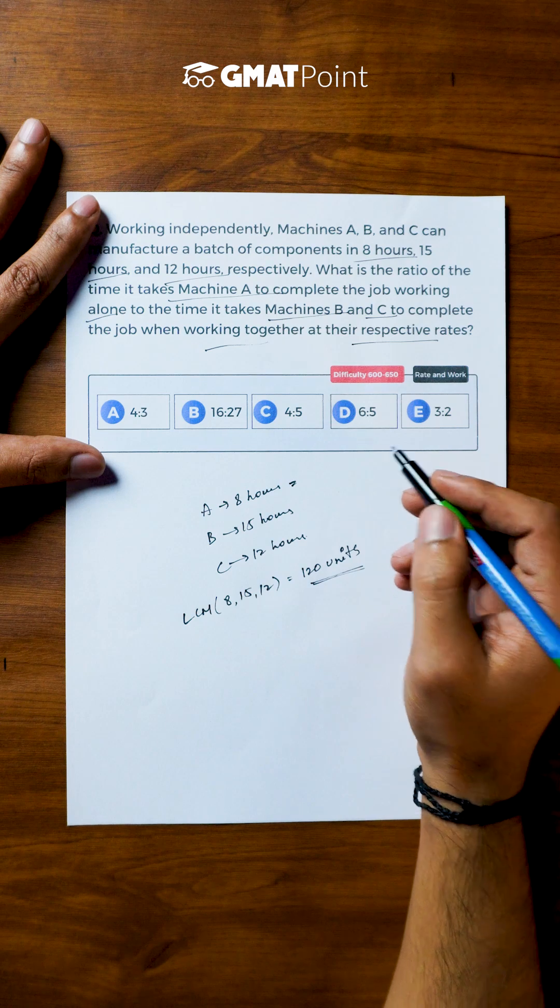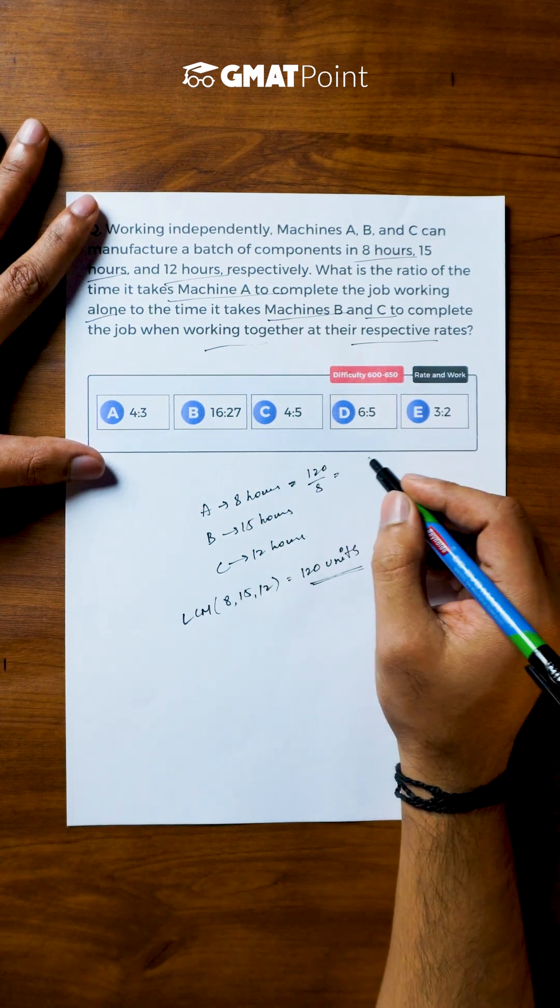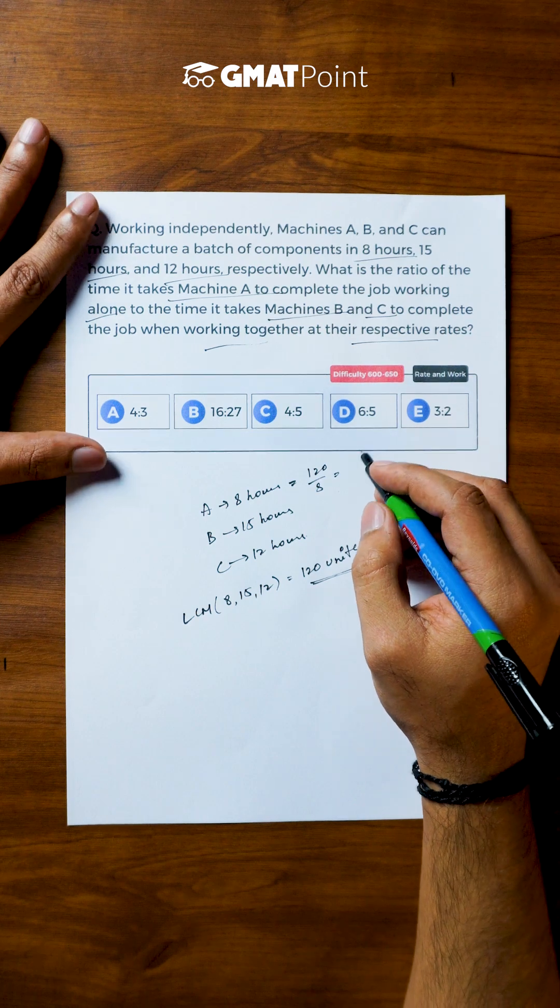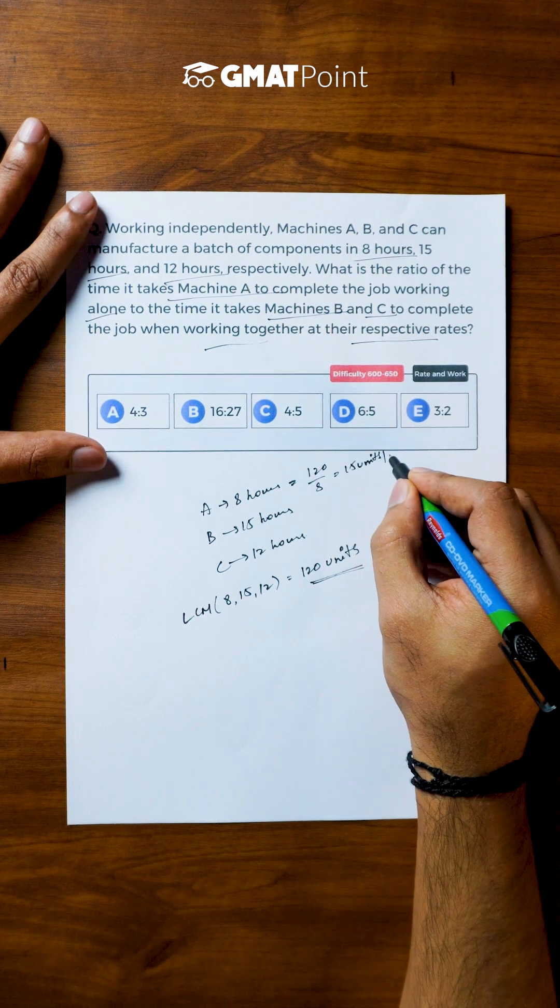So if A is doing 120 units of work in 8 hours, per hour the number of units of work done can be calculated as 15 units per hour.